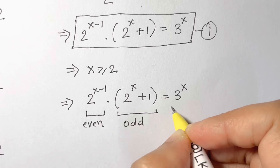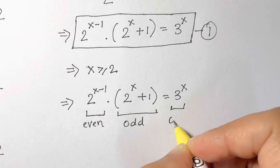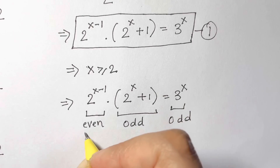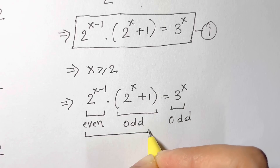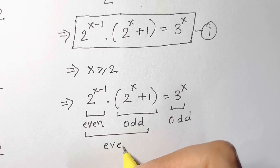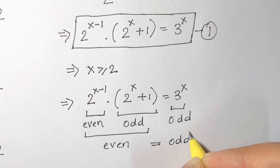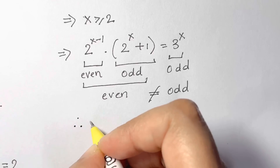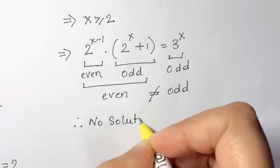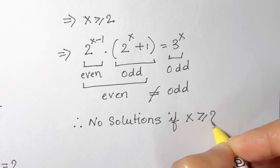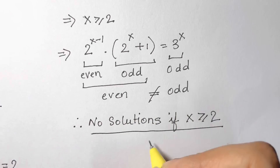The term (2 to the power of x plus 1) is odd, and 3 to the power of x is odd. Even times odd is even, and even is not equal to odd, therefore there are no solutions if x is greater than or equal to 2.